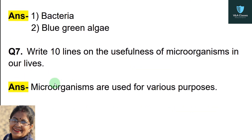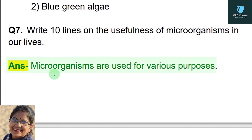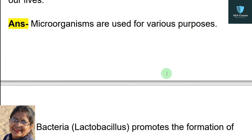Question number 6: name the microorganisms which can fix atmospheric nitrogen in the soil. Answer: bacteria and blue-green algae.